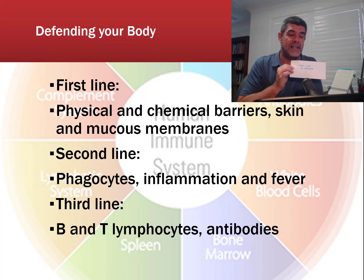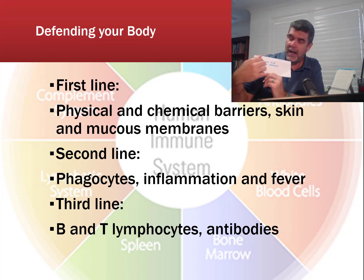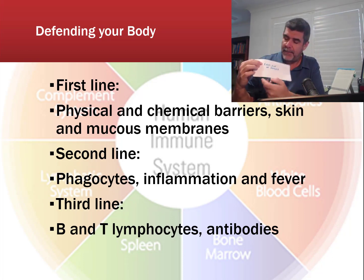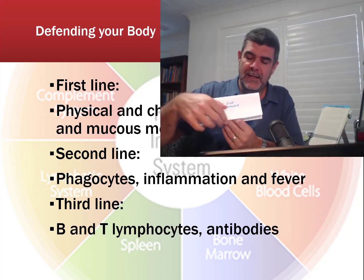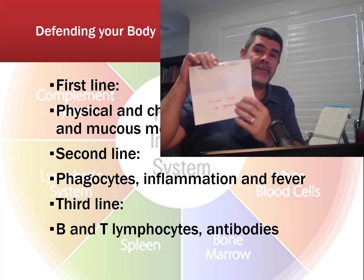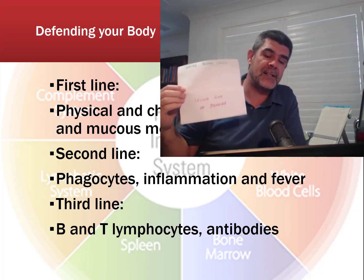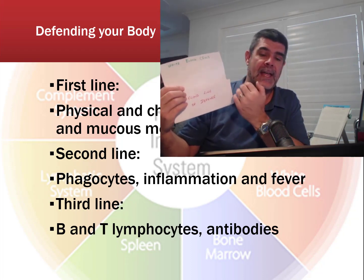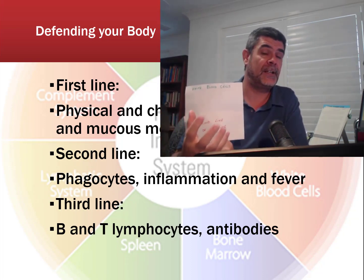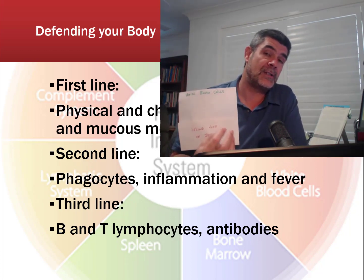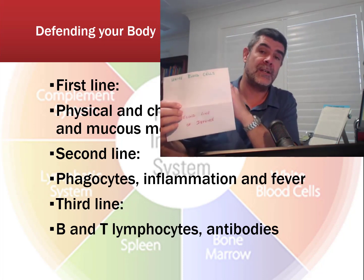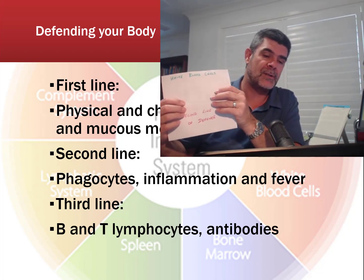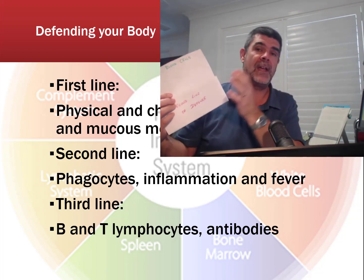The first line of defense is the physical and chemical barriers. You might add skin or mucous membranes, and some of the particular chemicals secreted at different parts of the body to stop entry of pathogens. Then we look at our second line of defense, where we have white blood cells involved — these are the phagocytes. There's also an inflammatory response and fever, with higher temperatures and an influx of blood and blood products going to a site where the first line was breached, such as a cut in your skin. We looked specifically at neutrophils and macrophages.